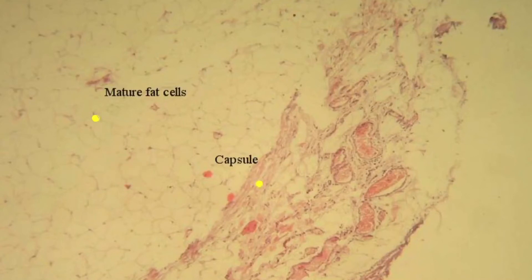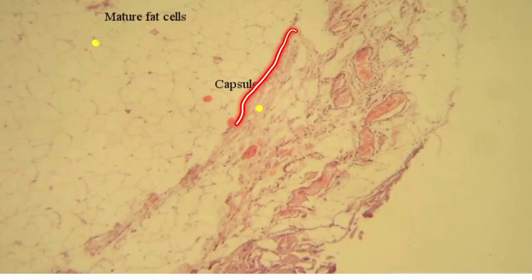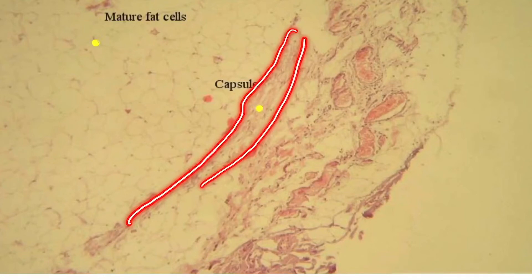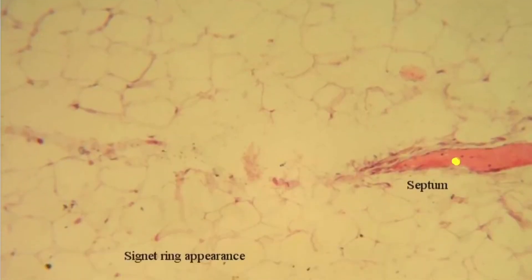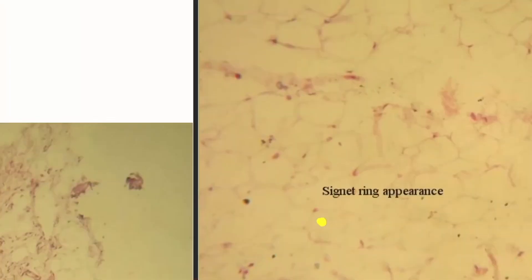And here is another cell where the nucleus is placed not in the center. Next, here you can see a capsular layer, the capsule. Here you can see a septum also, fibrous septa.